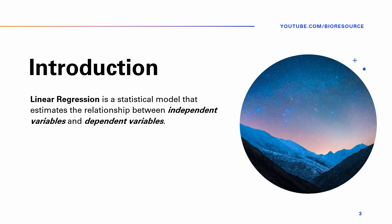So what is linear regression? Linear regression is a statistical model that estimates the relationship between an independent variable and a dependent variable using a straight line. Regression allows researchers to predict or explain variation in one variable based on another variable.